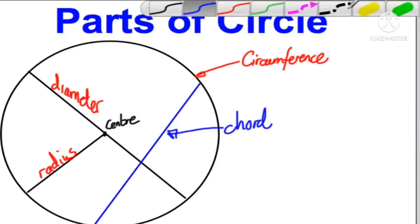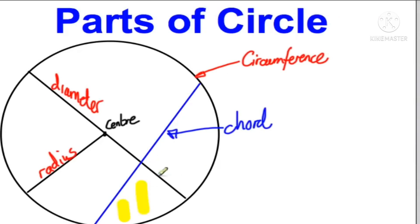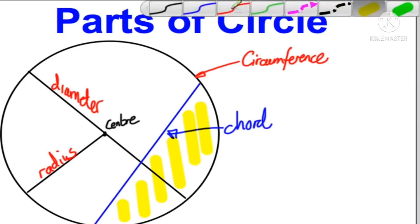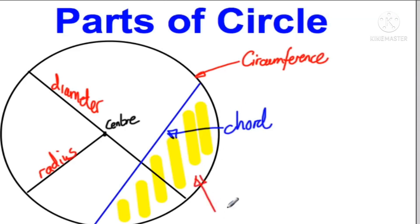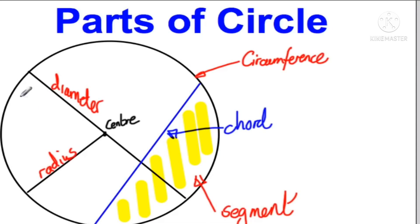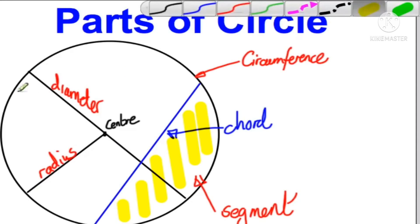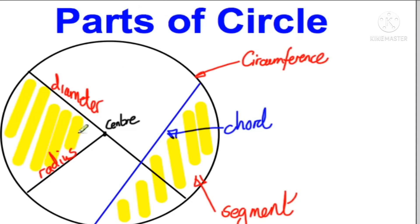CD is a chord and it divides a circle into two parts called segments. The smaller part is called the minor segment and the larger part is called the major segment. The chord also divides the circumference into two parts — the smaller part is called a minor arc because it is less than a semicircle, and the larger part is a major arc because it is greater than a semicircle.